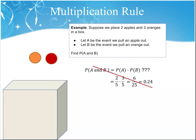This isn't correct, though, because it doesn't take into consideration the fact that we pulled out a piece of fruit. When we pulled out the apple with a probability of 2 out of 5, now when we pull the orange out next, we only have 4 pieces of fruit in the box. So the probability of event A and event B happening is 2/5 times 3/4 — the actual probability is 6/20, which is 0.3.